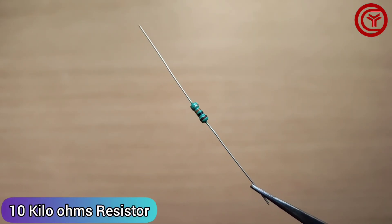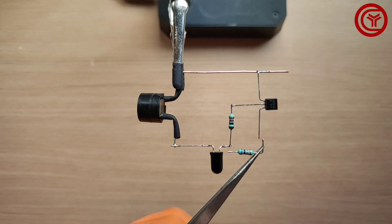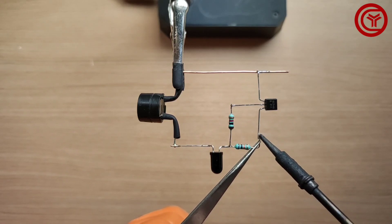Take a 10 kilo ohm resistor and solder it between the emitter of transistor and IR positive.